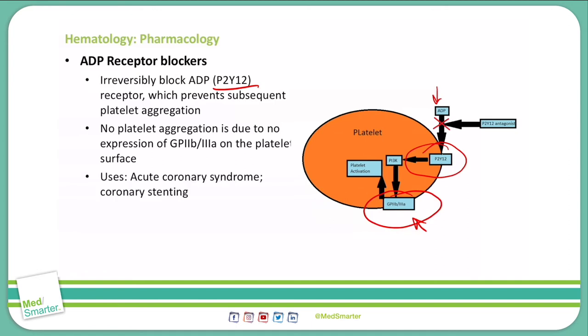We use this in acute coronary syndrome and coronary stenting. So if you have stents placed into your heart, we can use the ADP receptor blocker to keep anything from binding to that stent and causing a clot, completely reversing the effects we have been able to establish with the use of that stent.